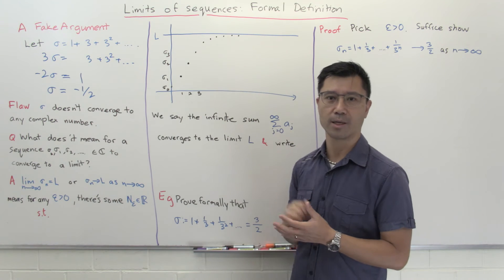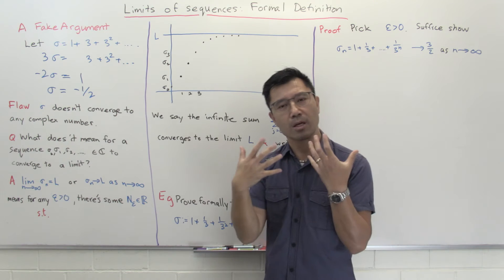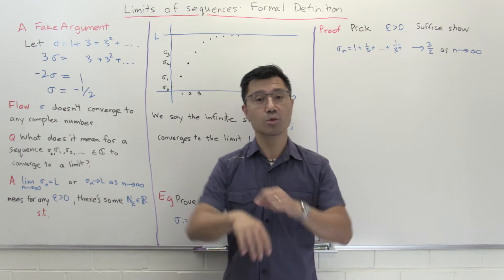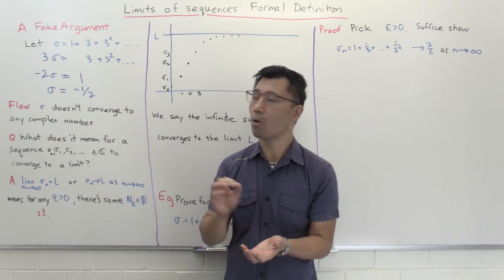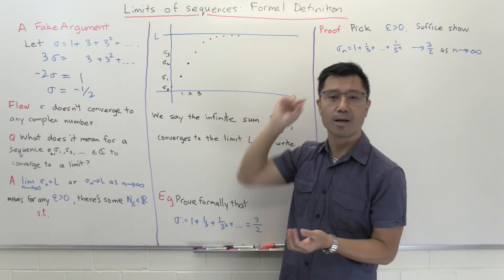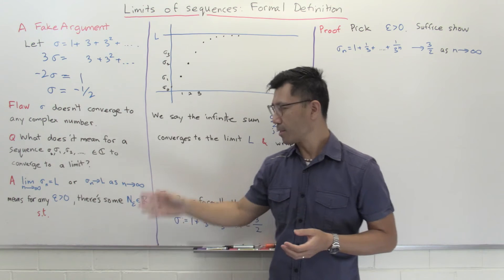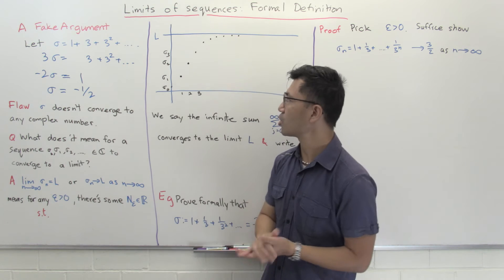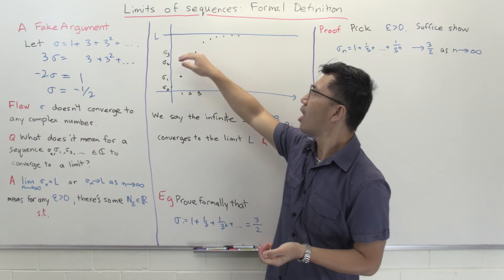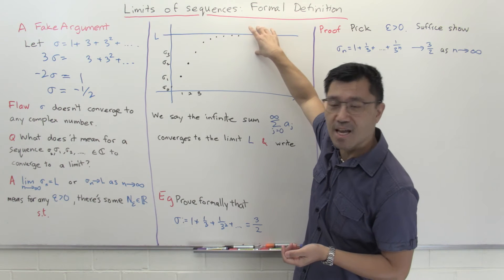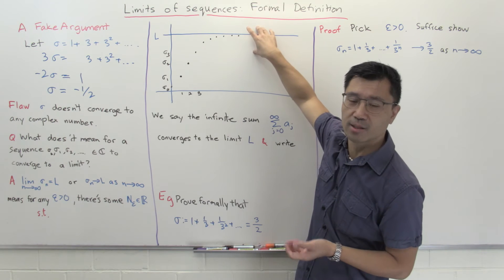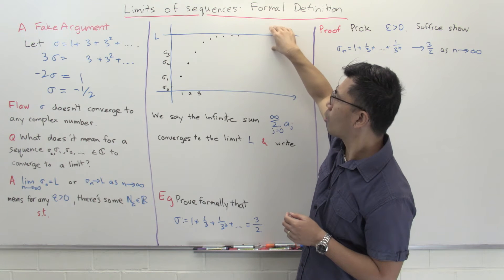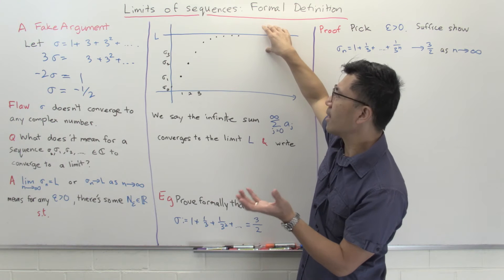That's one informal way of describing what a limit is. Now we want to turn that informal idea into something mathematically rigorous — rigorous enough to do proofs involving limits. You want to say: you can get as close to L, and in fact stay as close to L, as you like without touching it. How do you quantify 'as close as you like'?